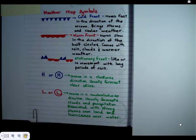A cold front is usually symbolized with little triangles. One way to remember that on a test, because your tests aren't going to be color coded, is that the triangles look like icicles. Your cold front moves pretty fast in the direction of the arrows and brings storms and cooler weather.